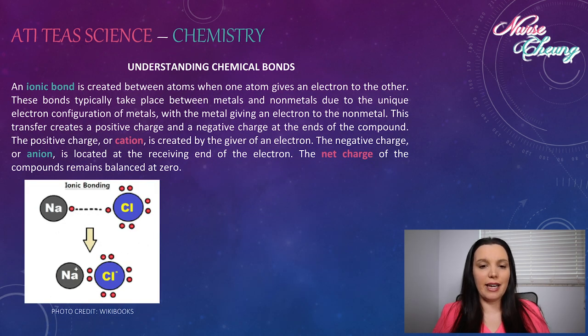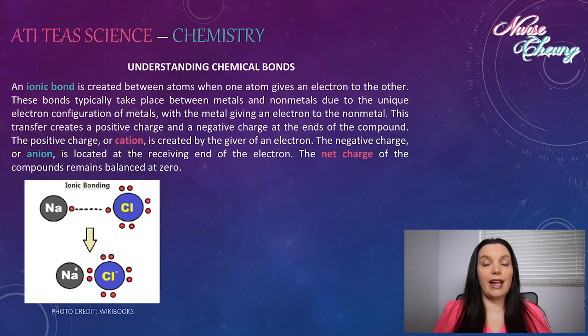An ionic bond is created between atoms when one atom gives an electron to the other. These bonds typically take place between metals and non-metals due to the unique electron configuration of metals, with the metal giving an electron to the non-metal. That transfer creates a positive charge and a negative charge at the ends of the compound. A positive charge or cation is created by the giver of the electron. The negative charge or anion is located at the receiving end of the electron. The net charge of the compounds remains balanced at zero.